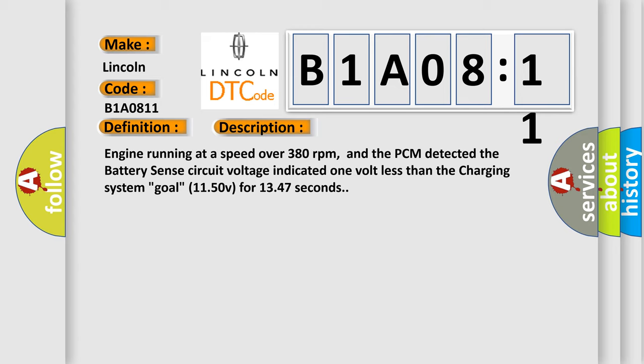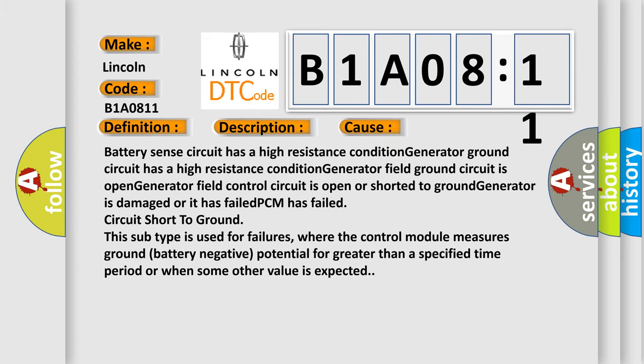This diagnostic error occurs most often in these cases: battery sense circuit has a high resistance condition, generator ground circuit has a high resistance condition, generator field ground circuit is open, generator field control circuit is open or shorted to ground, generator is damaged or has failed, or PCM has failed.